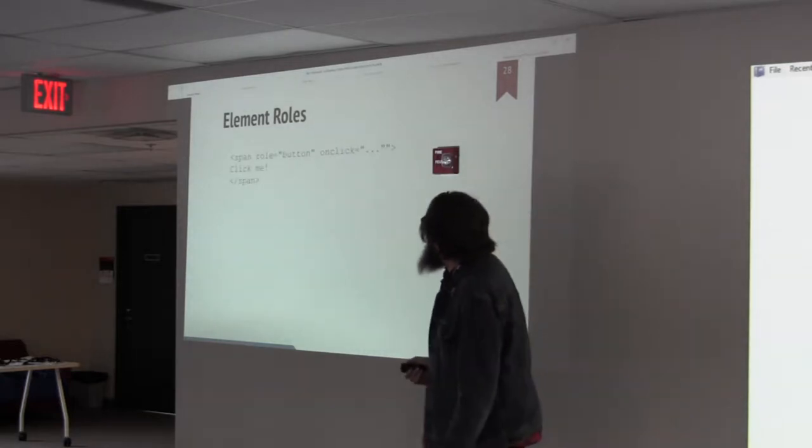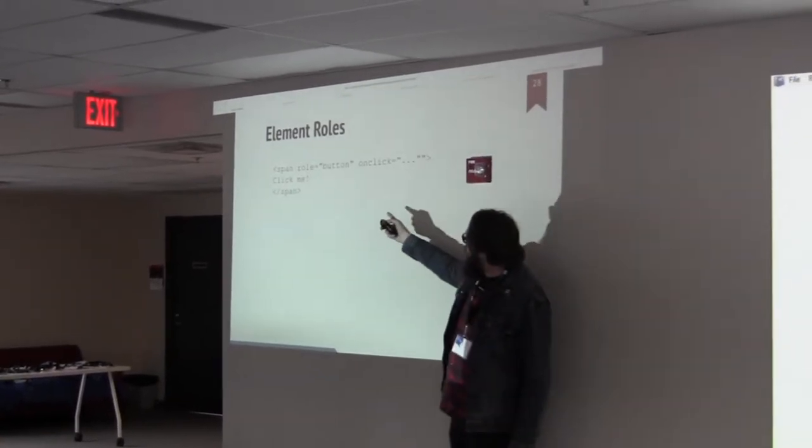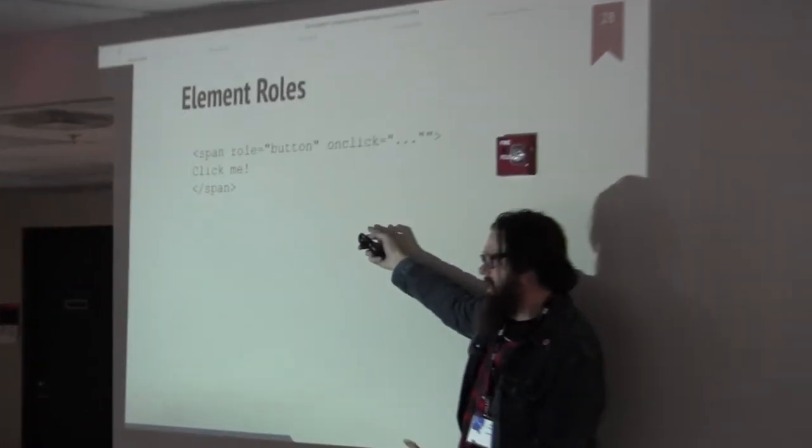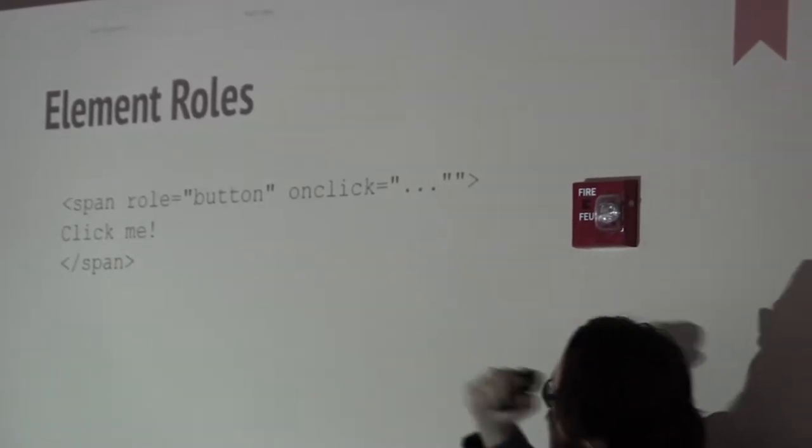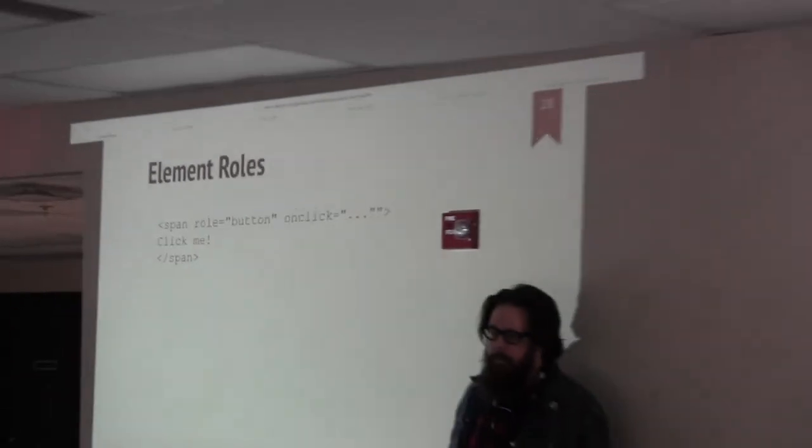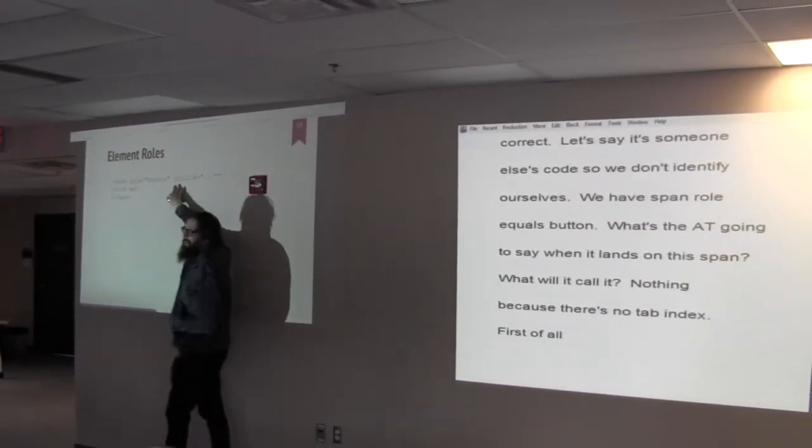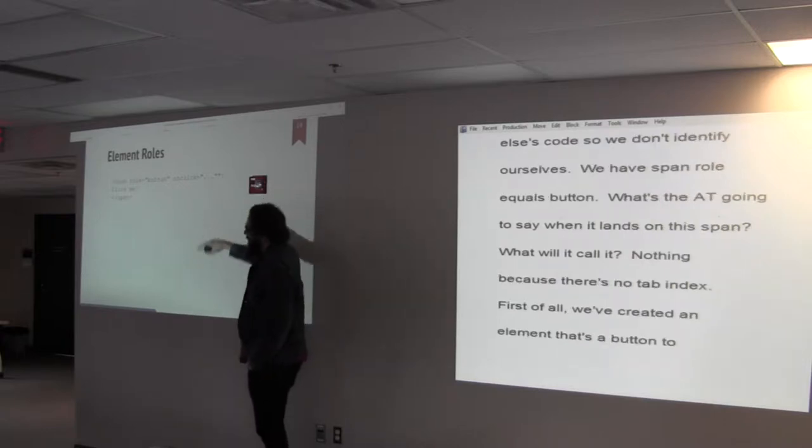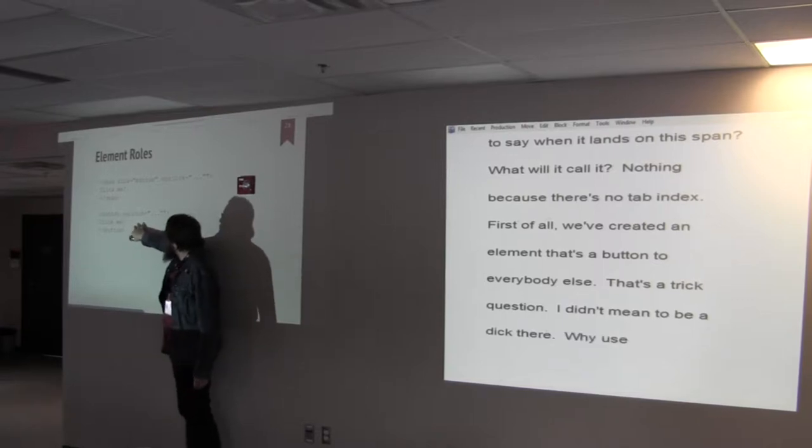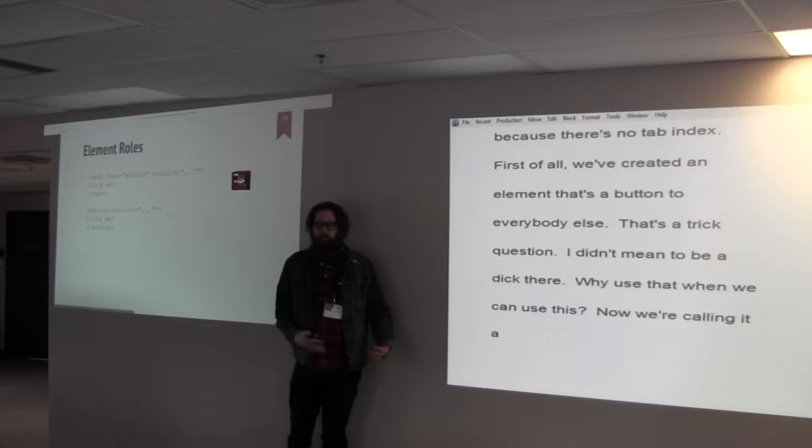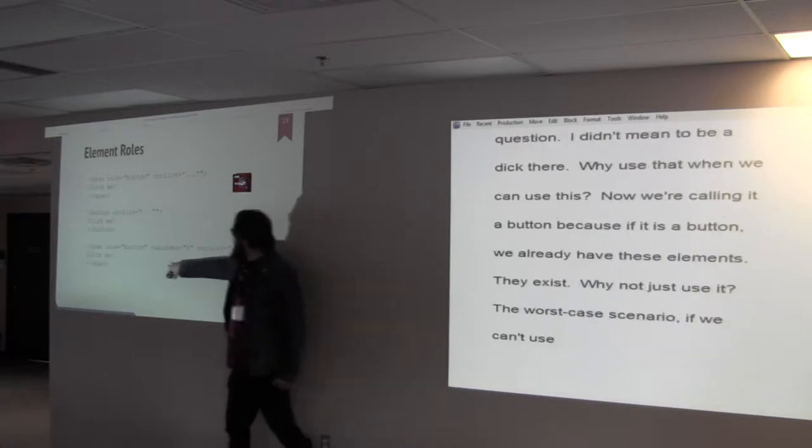Let's look at our element roles. So what's Nick going to say when he lands on the span? What's Nick going to call it? So first of all, we've created an element that's a button to everybody else except for people using screen readers because they can never actually read it. Why use that when we can use this, right? That would probably be better. Because if it is a button, why not? We already have these elements. They exist. Why not just use it?